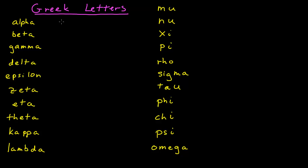We'll do lowercase first. The first letter is pretty straightforward — alpha, I write like that. Beta, I write like this. The obvious thing about beta that runs into problems is you want to be able to distinguish it from a capital B. I sort of emphasize this tail on the end of the B, and also make it a little more curved at the top, instead of a more straight capital B.